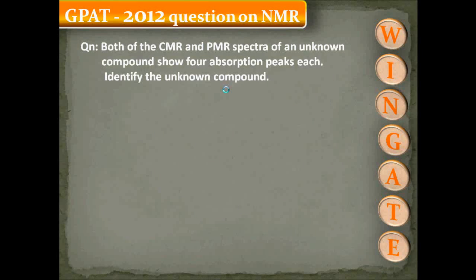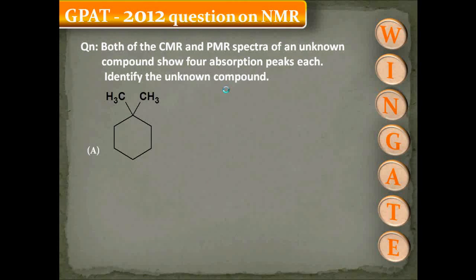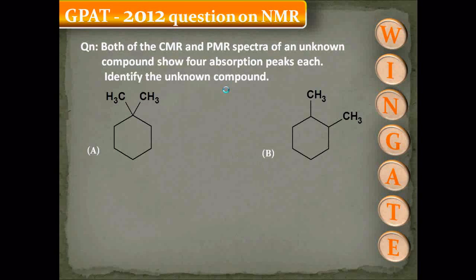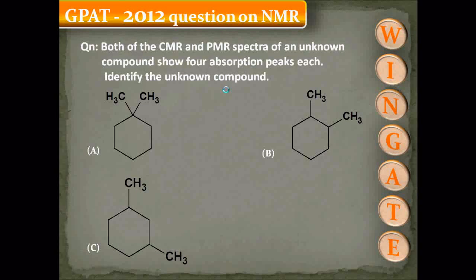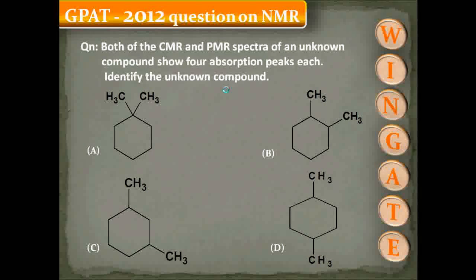Both the CMR and PMR spectra of an unknown compound show four absorption peaks each. Identify the unknown compound. Option A: 1,1-dimethylcyclohexane. Option B: 1,2-dimethylcyclohexane. Option C: 1,3-dimethylcyclohexane. Option D: 1,4-dimethylcyclohexane.